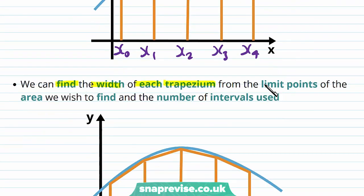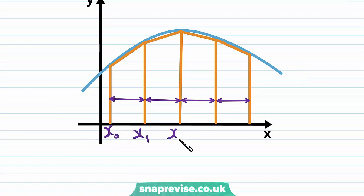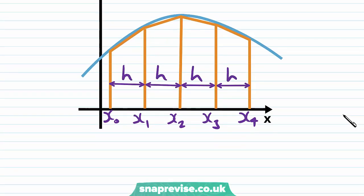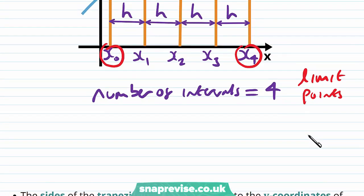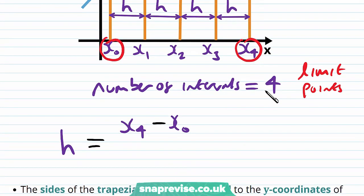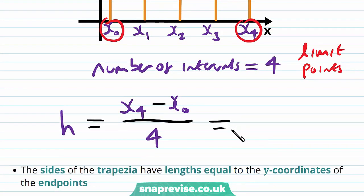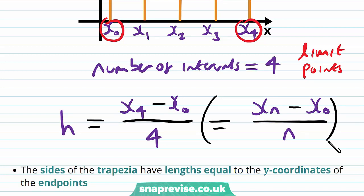We can find the width of each trapezium from the limit points of the area we wish to find and the number of intervals used. We have endpoints x0 and x4 as our limit points, and 4 intervals — the same as the number of trapezia. To find h, we do x4 minus x0 divided by 4. In general, starting from x0, h equals xn minus x0 over n, where n is the number of intervals.